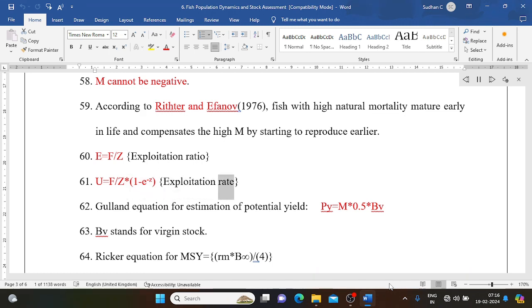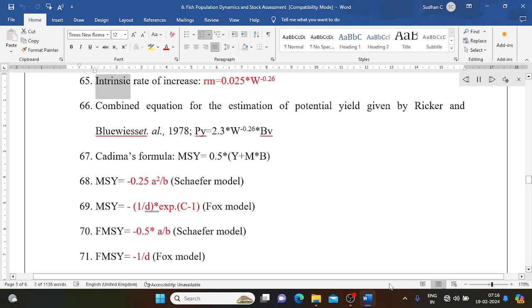Gulland equation for estimation of potential yield: PY equals M times 0.5 times BV. BV stands for virgin stock. Ricker equation for MSY equals rm times B infinity/4. Intrinsic rate of increase rm equals 0.025 times W infinity to the minus 0.26. Combined equation for the estimation of potential yield given by Ricker and Blyuezet al. 1978: PY equals 2.3 times W infinity to the minus 0.26 times BV. Cadima's formula: MSY equals 0.5(Y plus M)B. MSY equals minus 0.25 times a2/b for Schaefer model. MSY equals 1/d times exp(c minus 1) for Fox model. F MSY equals minus 0.5 times a/b for Schaefer model.